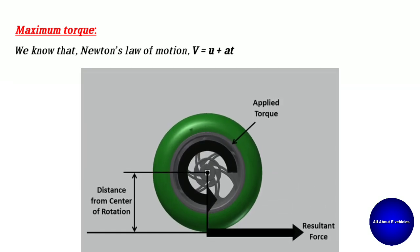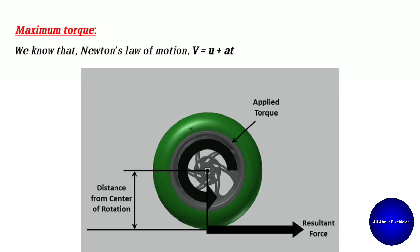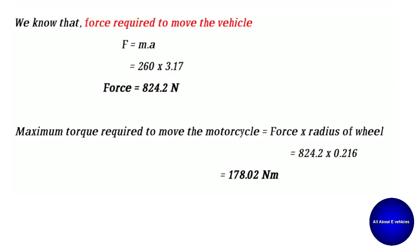This figure clearly shows that the torque required to move the vehicle is the force multiplied by the distance from the center of rotation, which is the radius of the wheel. For finding the force required to move the vehicle: F = mass × acceleration = 260 multiplied by 3.17. The force required to move the vehicle is 824.2 Newtons. The maximum torque required equals force multiplied by the radius of the wheel, as shown in the figure.